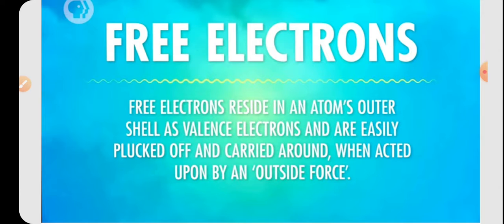These are the free electrons which decide the charge of the body. Free electrons reside in the outer shell as valence electrons and are easily plugged off and carried around when acted upon by some outside force. So, these electrons are present in the outer shell, they get plugged off and they enter in some other atoms.